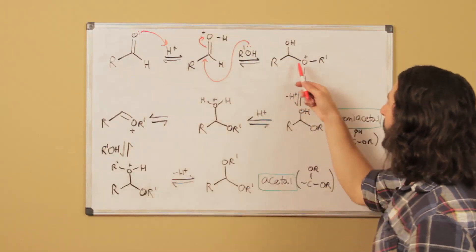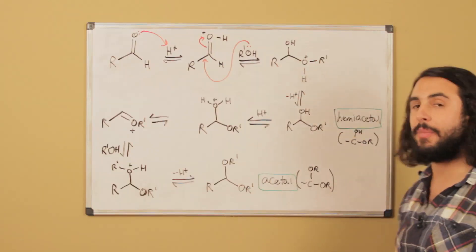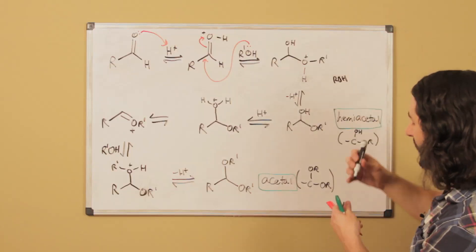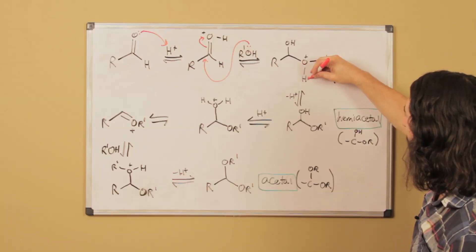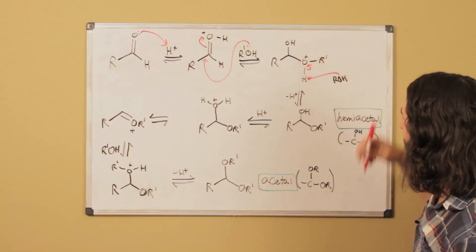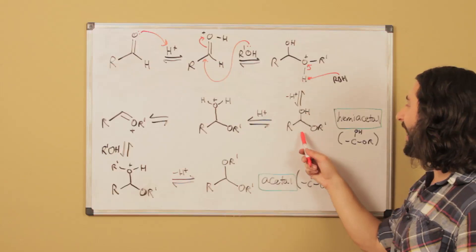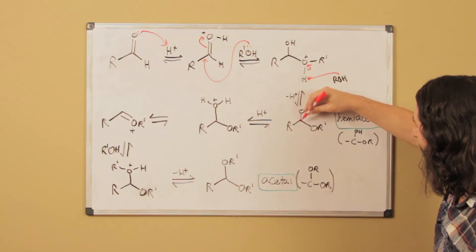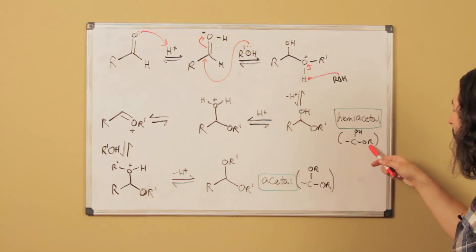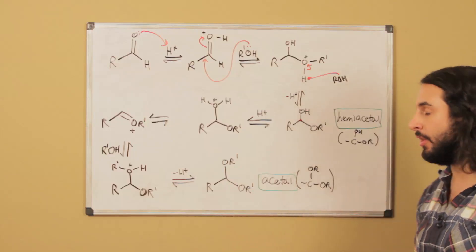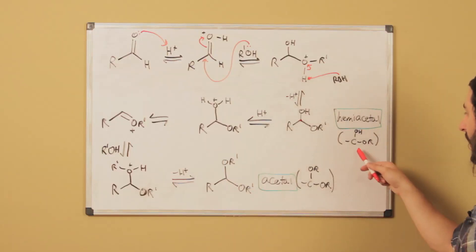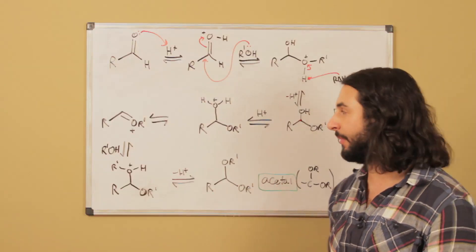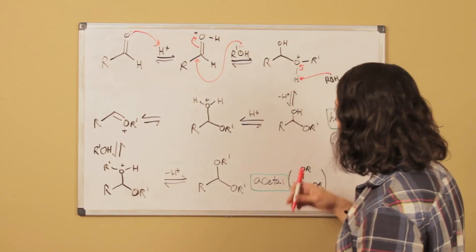That oxygen really wants to become neutralized, so this alcohol can attack right there. This pi bond goes ahead and neutralizes that oxygen. Now some other molecule in solvent — like another molecule of alcohol — can go ahead and grab that proton, and we get to the hemiacetal. This is called a hemiacetal because this is the hemiacetal carbon: it is a carbon bound to OR and OH. OR being any alkyl group, and if both of those are on one carbon, that is called a hemiacetal carbon.